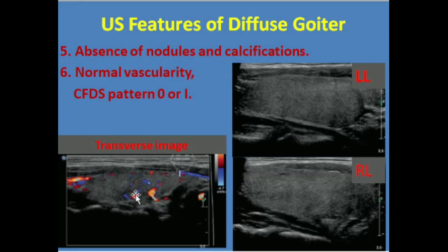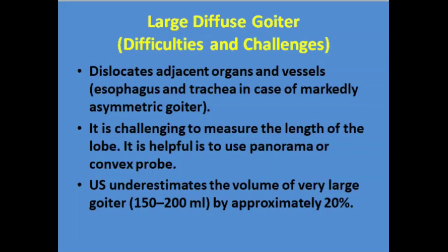Sometimes we face problems in cases of large or very large diffuse goiter. If it is very large, it may displace adjacent organs or vessels, especially the esophagus. If it is more enlarged and asymmetrical, the trachea may also be displaced. It is also a challenging task to measure the length of the lobe in very large goiter, but this can be rectified by using the convex probe.